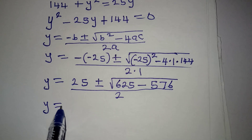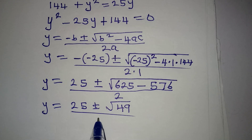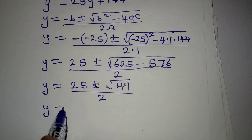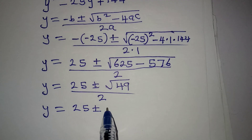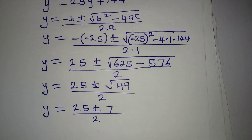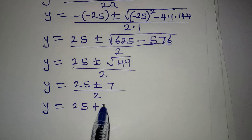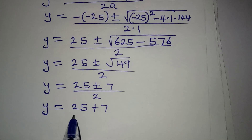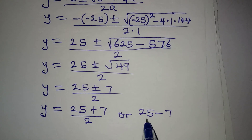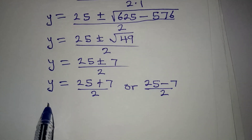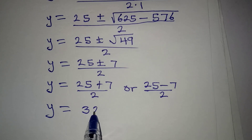Subtracting gives 49 under the square root. So y equals 25 plus or minus square root of 49, all over 2. Square root of 49 is 7. So y equals 25 plus 7 over 2, or y equals 25 minus 7 over 2. That gives 32 over 2, or 18 over 2.